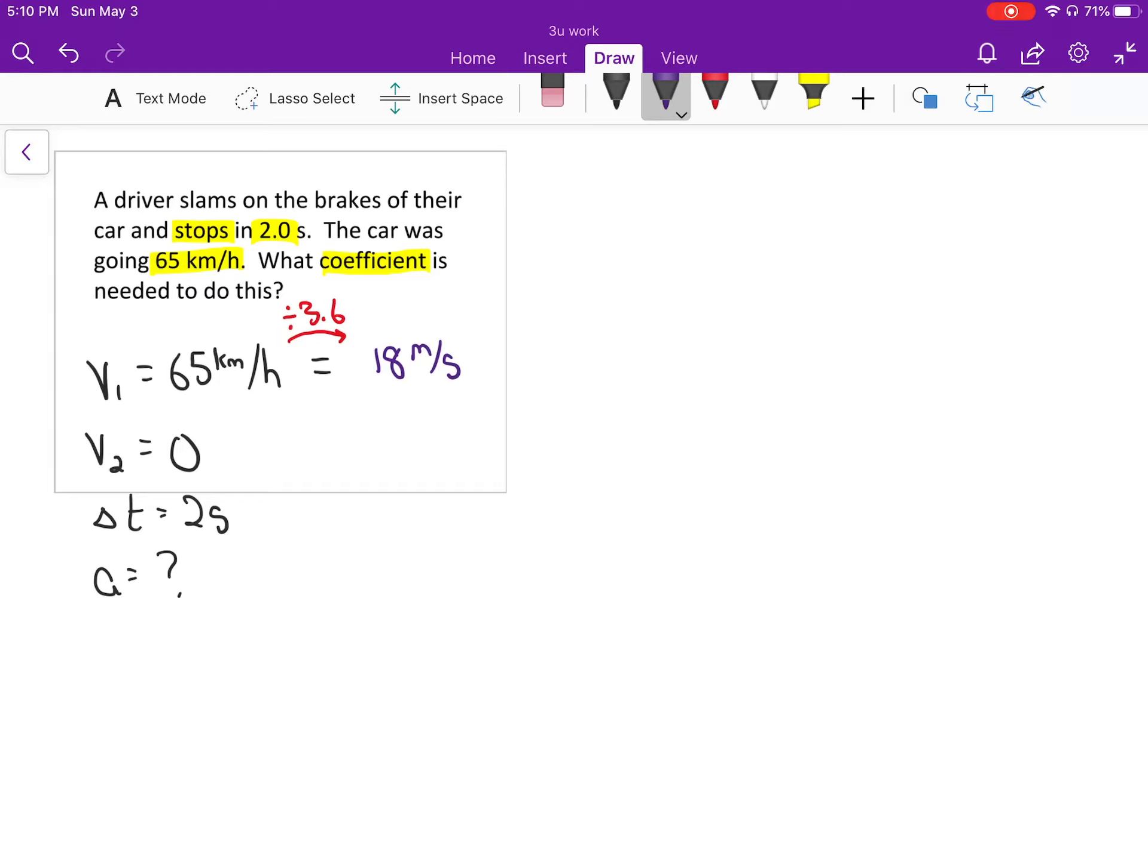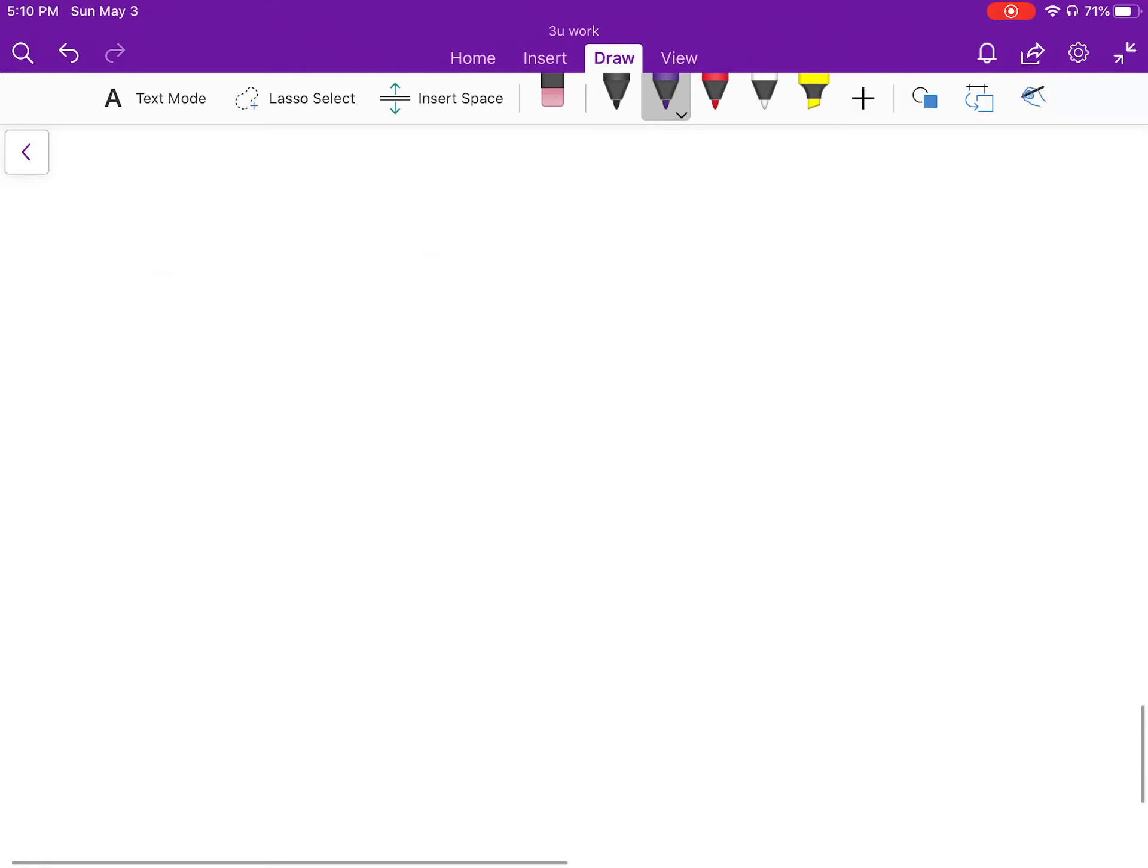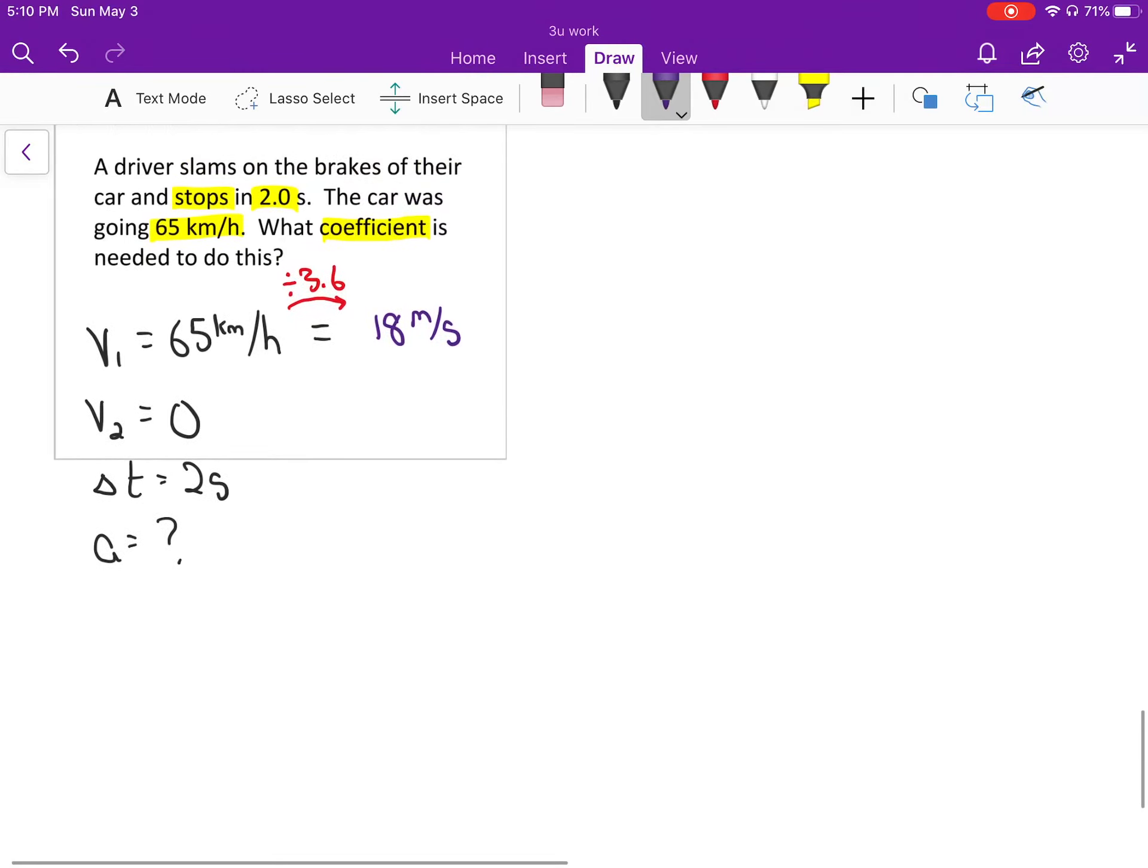Oops, didn't mean to change color but we'll just roll with it. In the kinematic setup here, we don't care about the d value. So that's kind of the definition of acceleration: a is v2 minus v1 all over delta t. So for these numbers, 0 minus 18 all over 2, our acceleration is negative 9 meters per second squared.